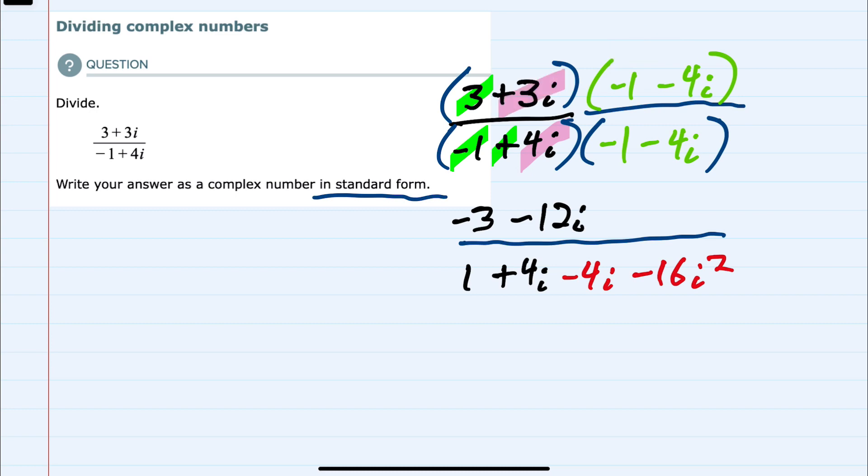And then distribute the plus 3i, which would give us 3i times minus 1 is minus 3i. And 3i times minus 4i is minus 12i squared.